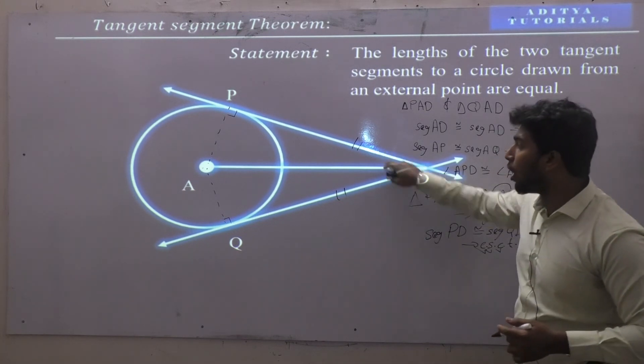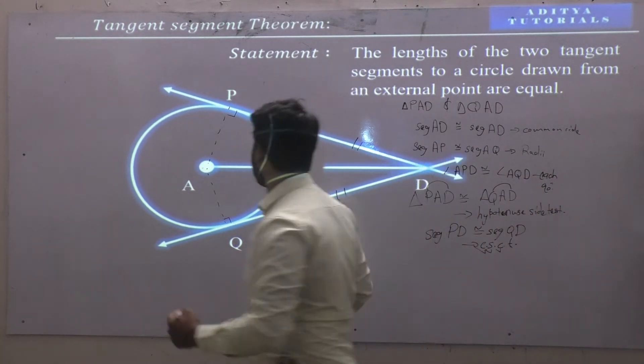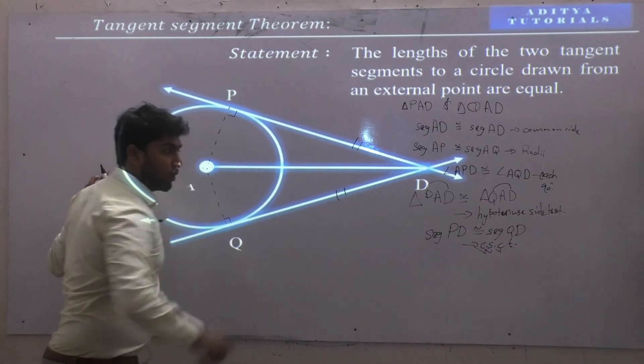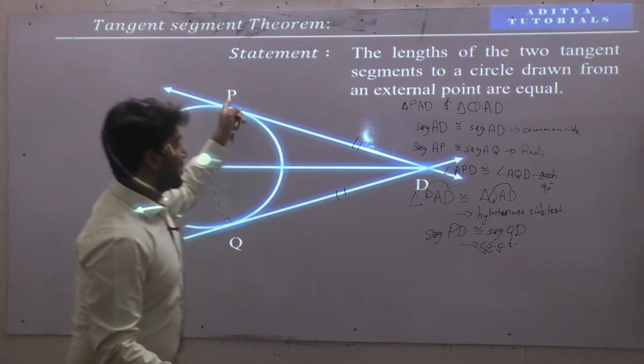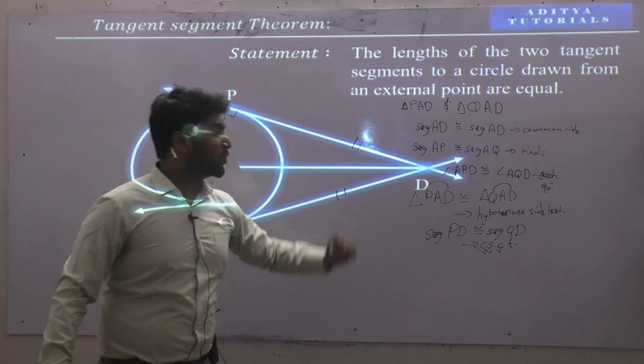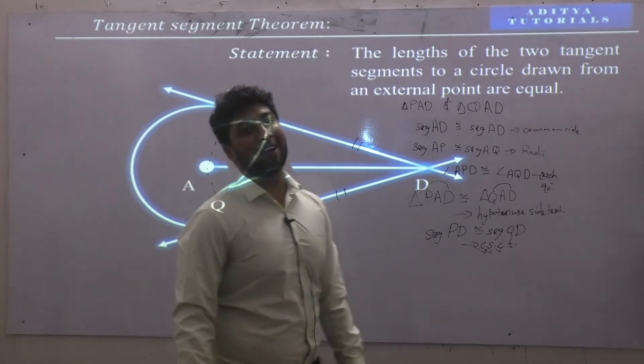CSCT, corresponding sides of congruent triangles. Corresponding sides of congruent triangles. How is it? How is it corresponding? Okay. Let's see. Sir, AD equal AD, okay. AP equal AQ, okay. What is it called? PD. AD equal AD, DQ. Corresponding sides of congruent triangles.